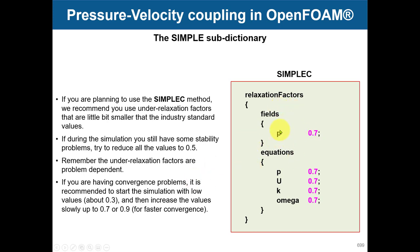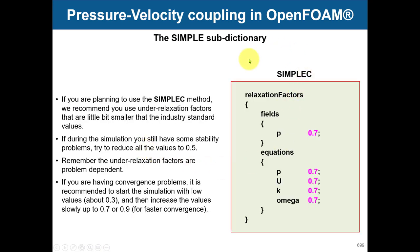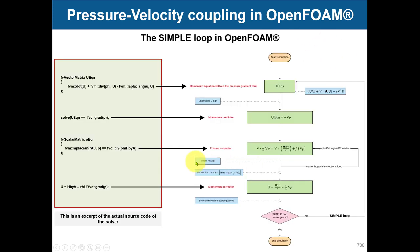My advice is to set all your flow variables' relaxation factors to 0.7. This will be a little bit slower but you are sure to get good stability. It will be slower than the maximum but much faster than very low values. So my advice: go SIMPLEC and use this relaxation factor setting.